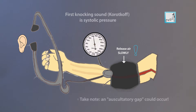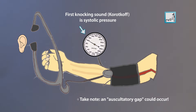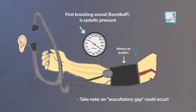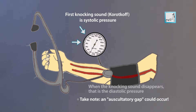As the pressure in the cuff falls, a whooshing or pounding sound is heard — it's called Korotkoff sounds — when the blood flow starts again in the artery. The pressure at which this sound begins is noted and recorded as the systolic blood pressure. The cuff pressure is further released until the sound can no longer be heard. This is recorded as the diastolic blood pressure. We can also palpate or feel the radial pulse to make sure that the lower reading is correct.